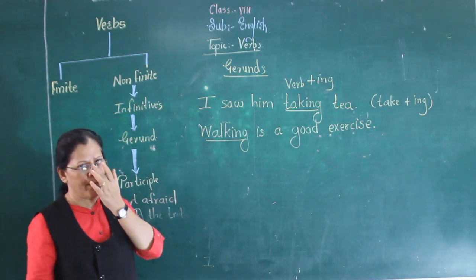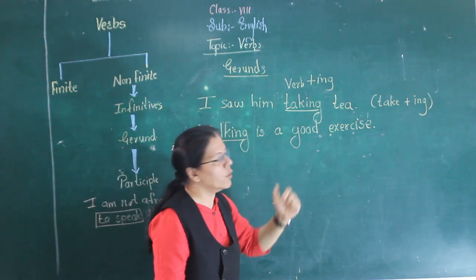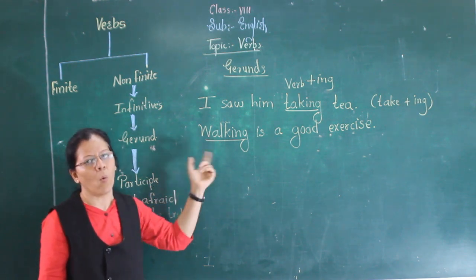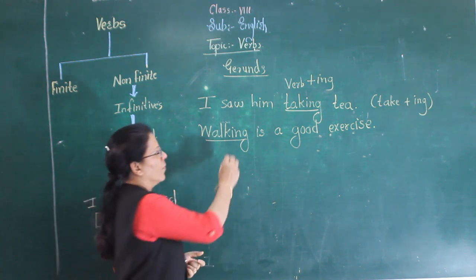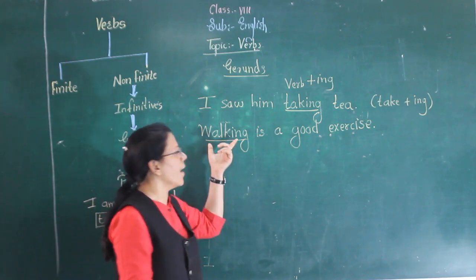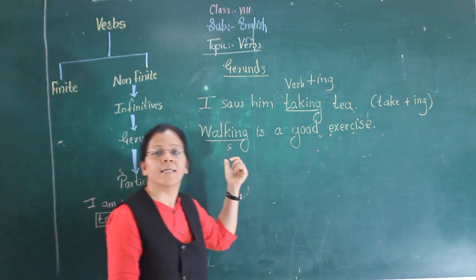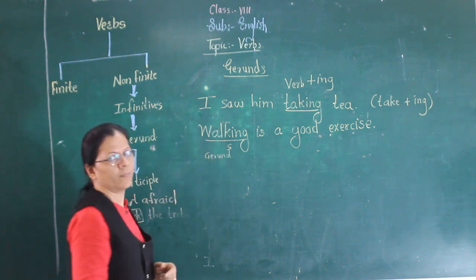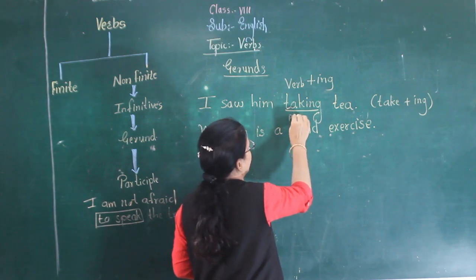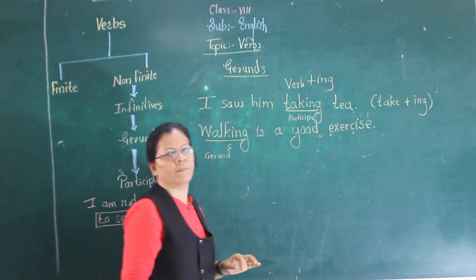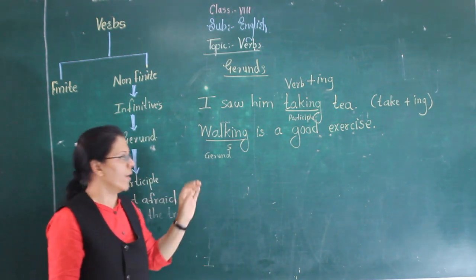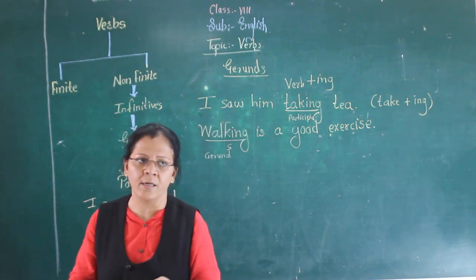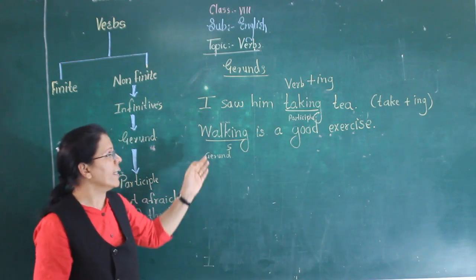In the second example, 'Walking is a good exercise', what is a good exercise? Walking. So 'walking' is the subject of the sentence. Here the ING form of the verb acts as a subject, hence 'walking' is a gerund. When the ING form of the verb acts as either a subject, an object, or a complement, then it is a gerund.